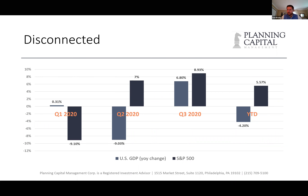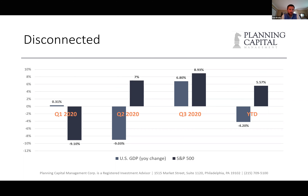There's a huge disconnect right now between the market and the economy. The best way to quantify that is just by looking at US GDP versus the stock market — versus the S&P 500. In the first quarter of the year, we saw a big correction in the stock market.